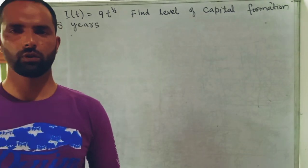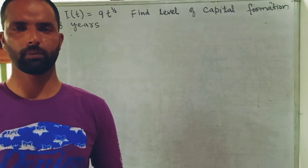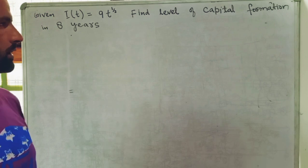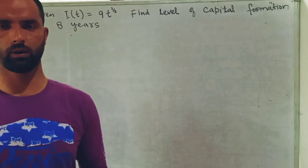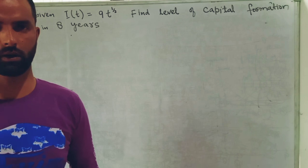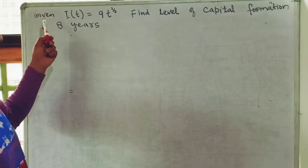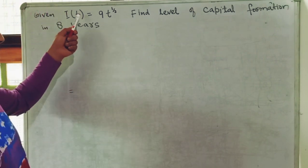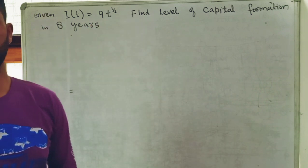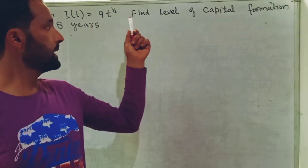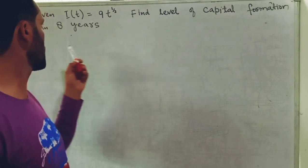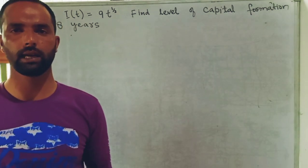Hi, this is Halal. In this video on the mathematical economics series, we will solve another numerical on the applications of the definite integral in economics. The question is: given I(t) = 9t^(1/2), where I is the net investment and t is the time period, find the level of capital formation in eight years.